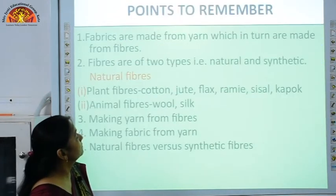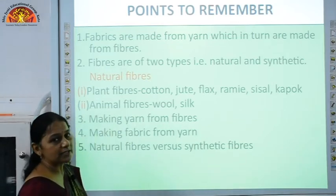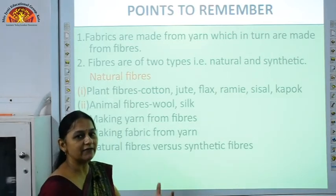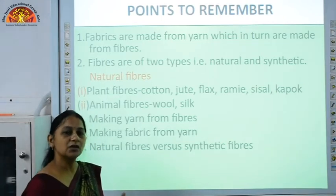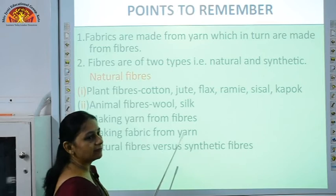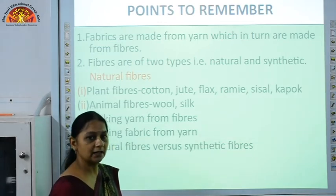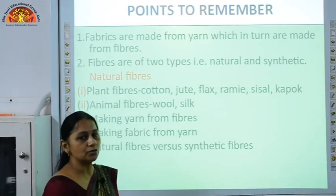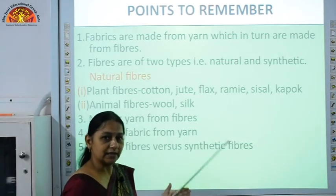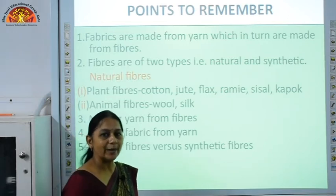Coming back to our important points. The next topic is making yarn from fibers. Spinning is the process by which we make yarn from fibers. Spinning can be done with the help of simple devices like charkha or takli, but nowadays we use spinning machines. The next process is making fabric from yarn. There are two processes: weaving and knitting. In weaving, two yarns are simultaneously used together to make a fabric. In knitting, a single yarn is used to make fabrics like sweaters and mufflers.